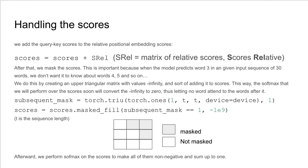Afterwards, it's important to mask the scores. This is important because when the model predicts word 3 in a given input sequence of 30 words, we don't want it to know about words 4, 5, and so on, because we want it to predict and not just have the answer. We do this by creating an upper triangular matrix with values minus infinity and sort of adding it to the scores. This way, the softmax that we will perform over the scores soon will convert the minus infinity to 0, thus letting no word attend to the words after it.